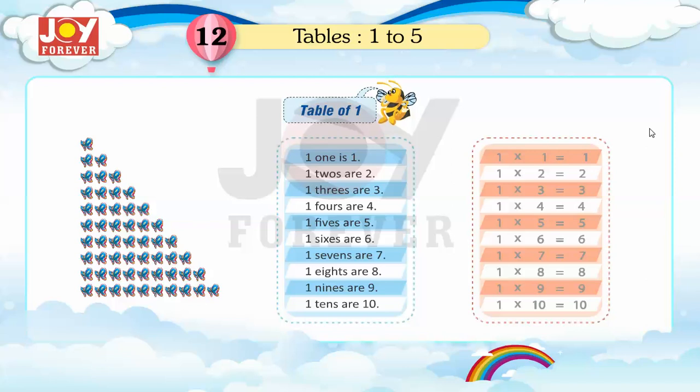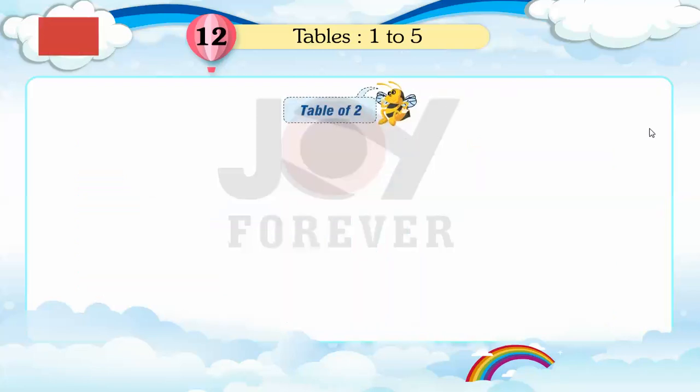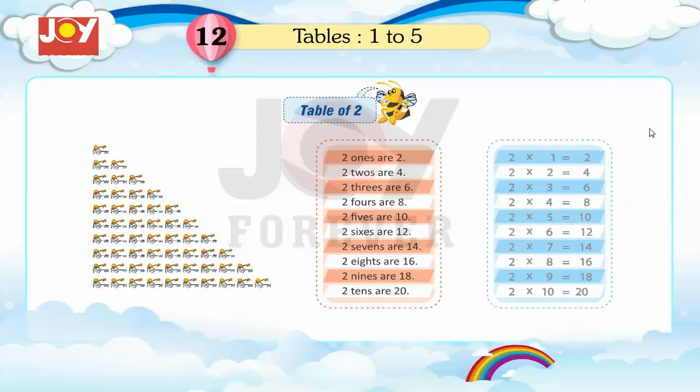1 nine are 9, 1 ten are 10. Table of 2: 2 ones are 2, 2 twos are 4.